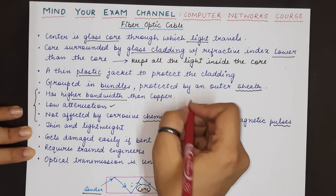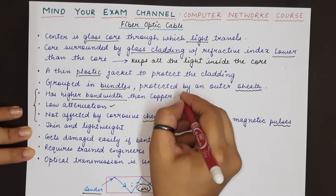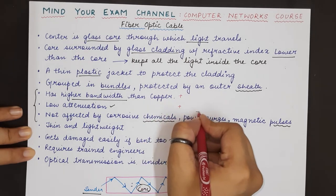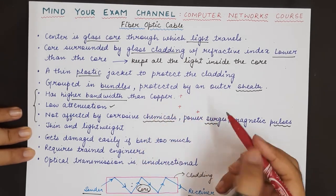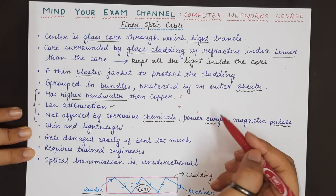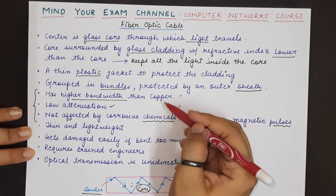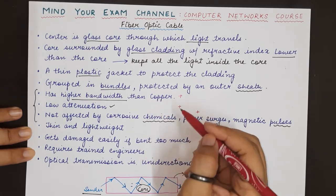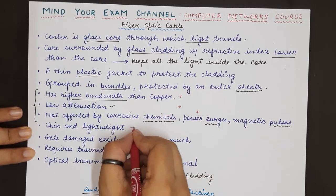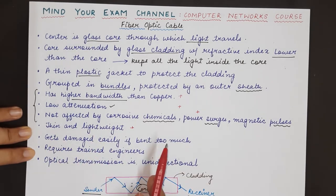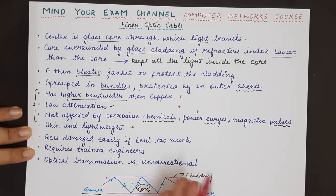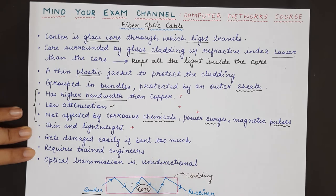These are all the advantages of fiber optic cables — they are very much protected against external factors and they have high bandwidth as compared to copper cables. The last advantage is that they are very thin and lightweight, so they are very easy to carry, transport, and use for laying down an entire network.